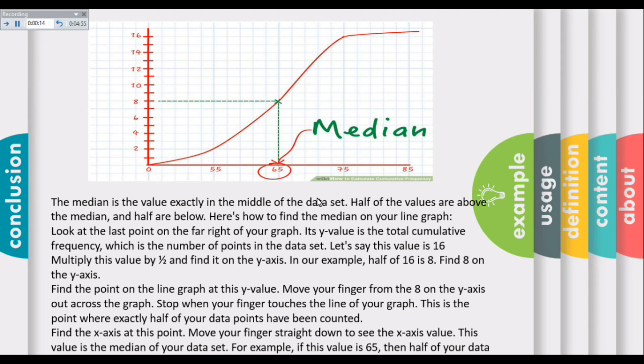The median can be found by looking at the last point on the far right of your graph. Its y-value is the total cumulative frequency. Find the point on the line graph at this y-value. Move your finger at the halfway point on the y-axis out across the graph.